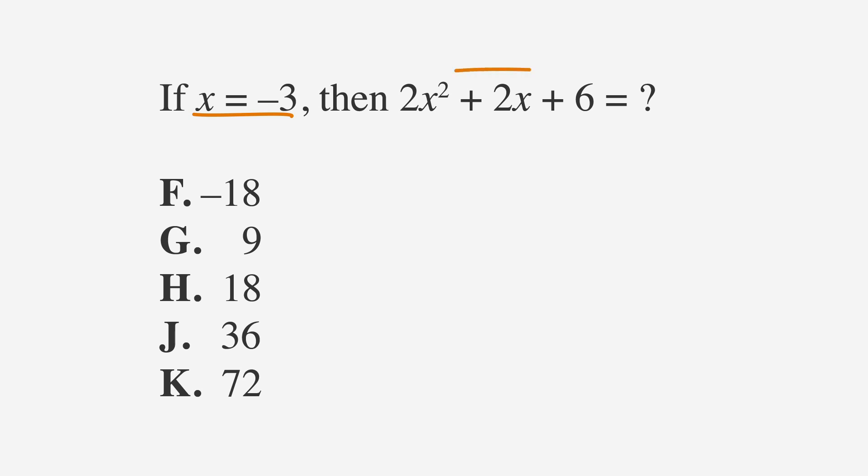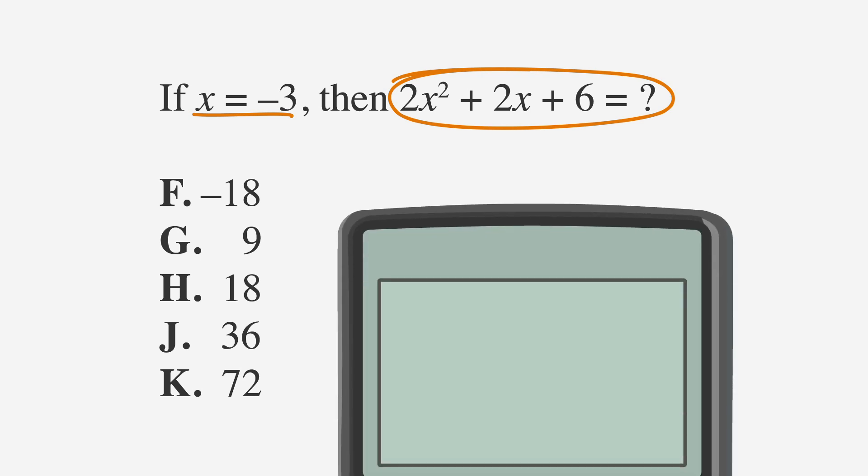Since x is equal to negative 3, we need to put parentheses around negative 3 in the calculator. So we enter 2, parenthesis, negative 3, parenthesis, squared, plus 2, parenthesis, negative 3, parenthesis, plus 6. We arrive at 18, which is answer choice H. Circle it because it is correct.